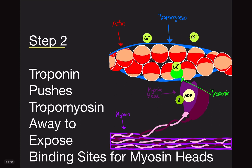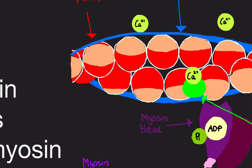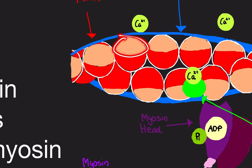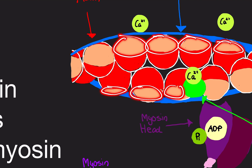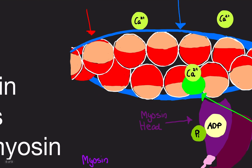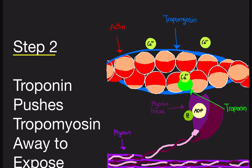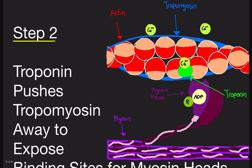Step two: troponin is going to push tropomyosin out of the way and expose the binding sites for myosin heads. The blue tropomyosin strand — this protein — is now out of the way, exposing the binding sites, these pale-looking spots. What troponin did is basically say, hey tropomyosin, move out of the way. This only happens when troponin has been exposed to calcium. Had troponin not been exposed to calcium, tropomyosin would just be covering the binding spots.